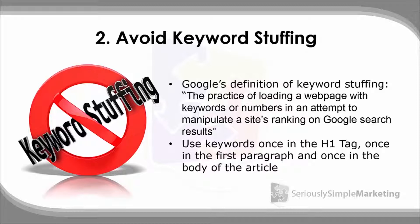Going back to our Austin breakfast example: the H1 title tag might be 'Top 10 Breakfast Foods in Austin.' Then in the first paragraph, I might say something like, 'Having recently moved to Austin, looking for the best breakfast foods was one of my first priorities.' The words Austin, breakfast, and food are still in that paragraph in a natural order. Google will know it's about that keyword phrase — it's gotten two signals, and it's written naturally. You'd also want to include the phrase once more toward the end of the article.